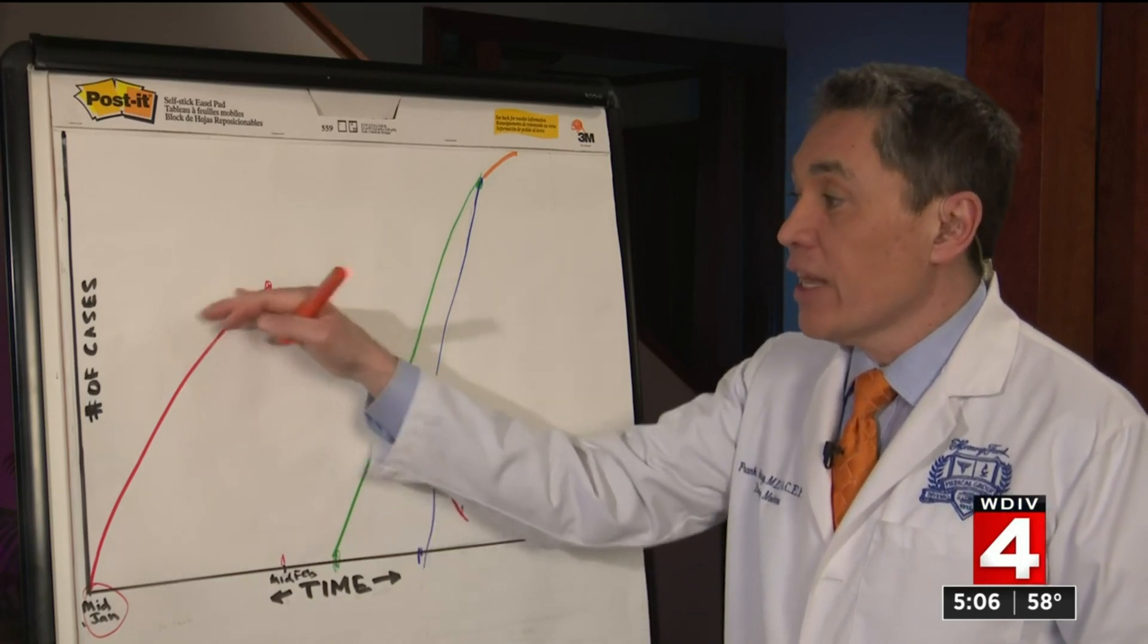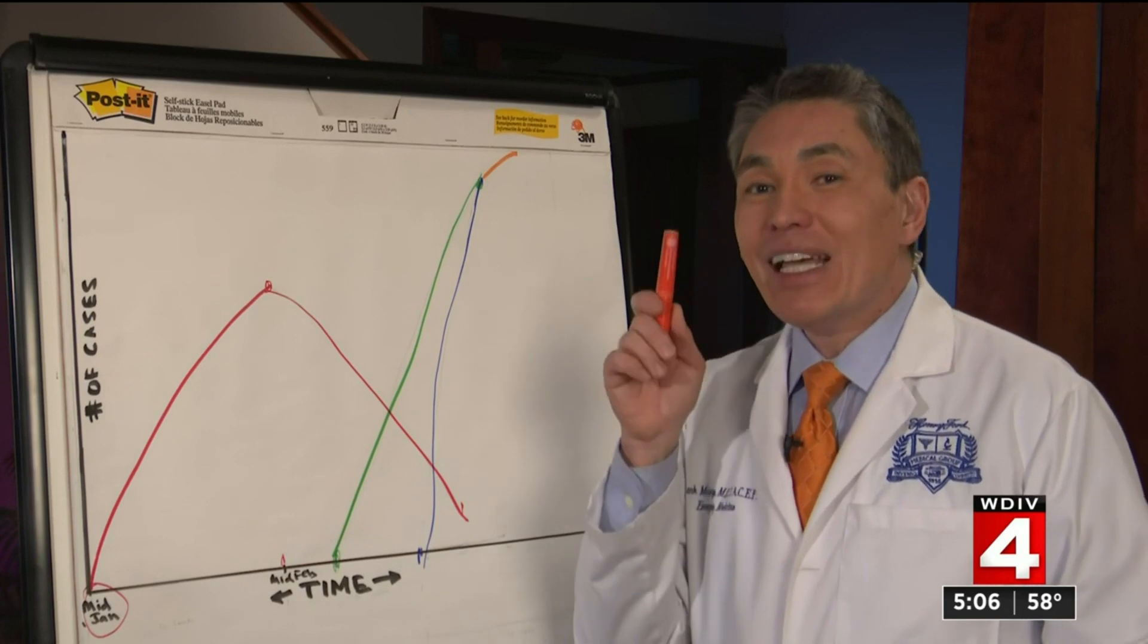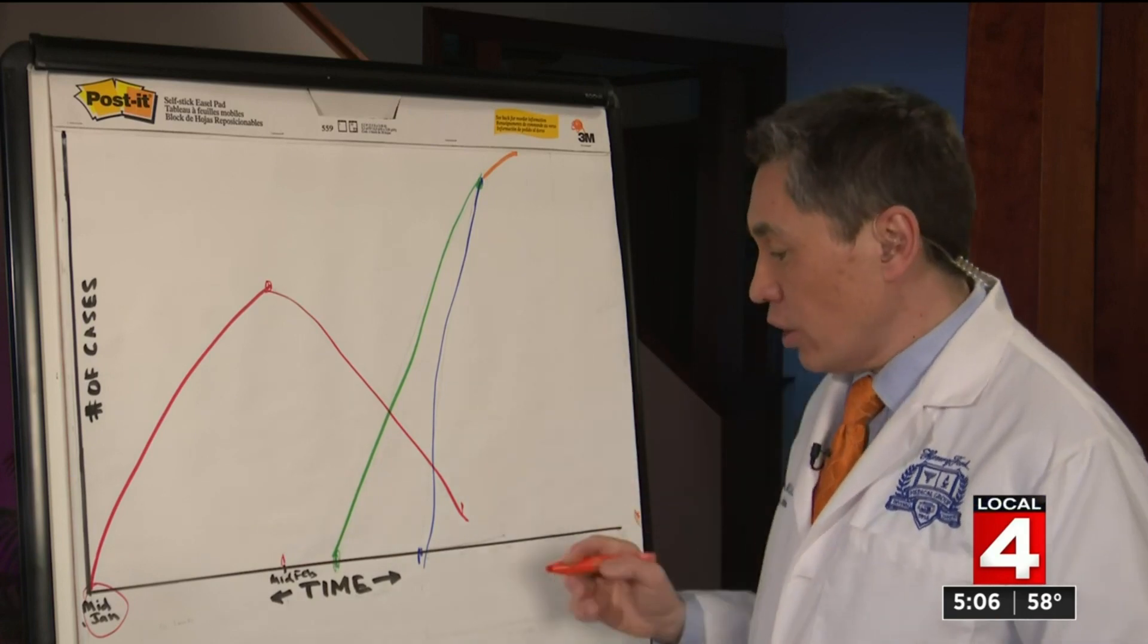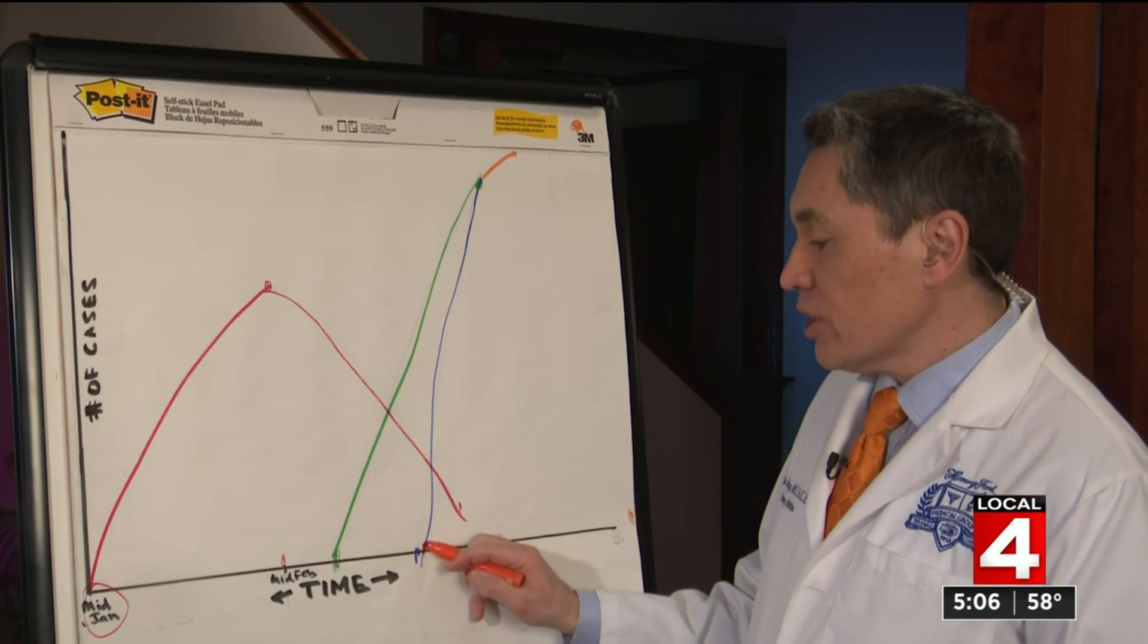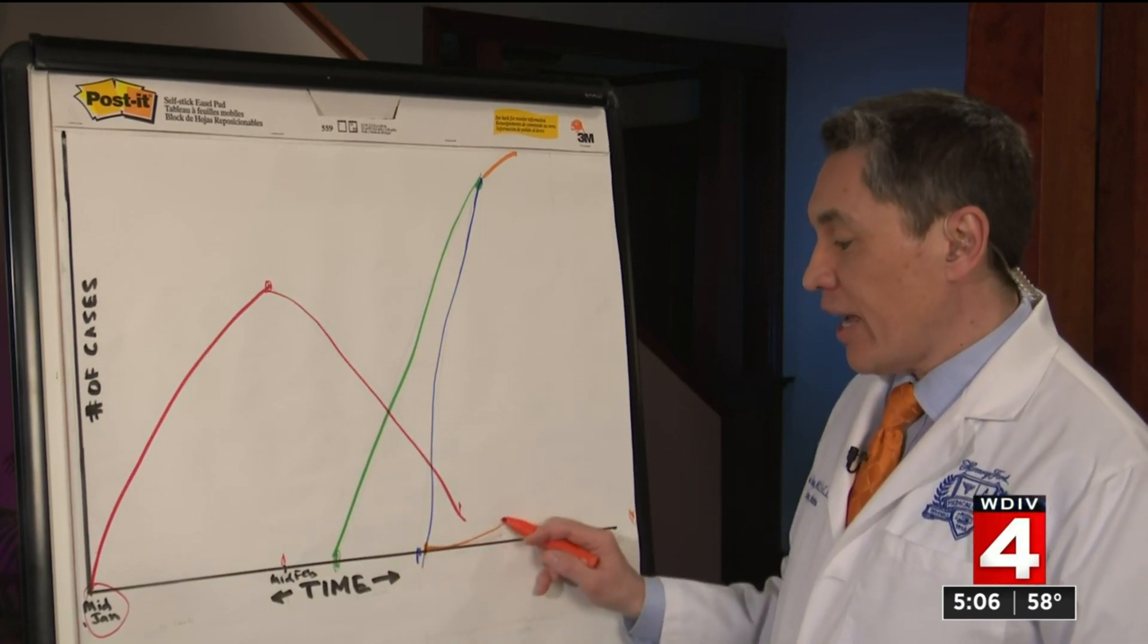And that, of course, is assuming that we follow China's curve. I also want to add, of course, the United States is very different. Every state is going to have its own curve. So here in Michigan, although the numbers are very low, we started about here. And the numbers look like this, where we're just starting to have a little pickup.